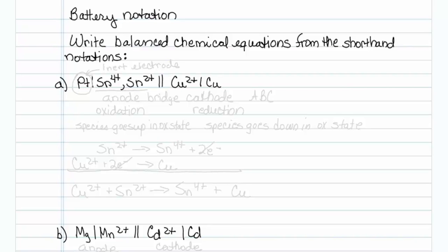The important thing to understand about any one of these is that they are anode, bridge, cathode, and it's kind of like ABC.